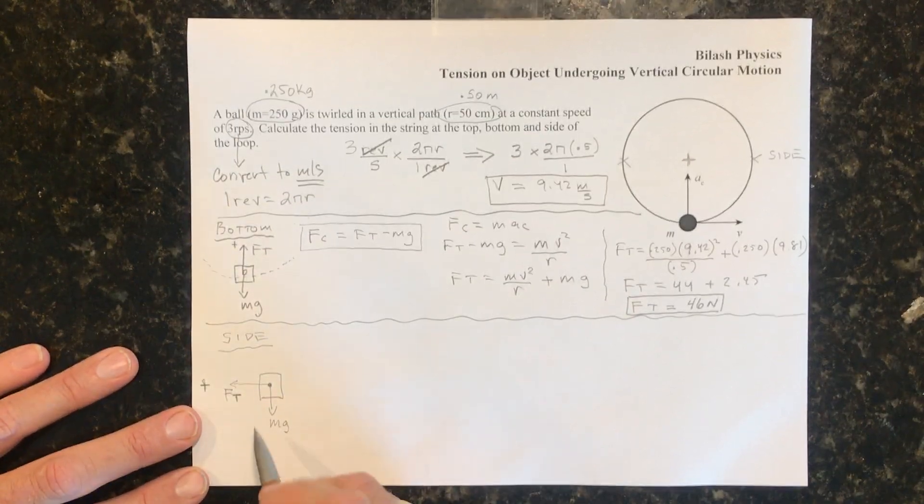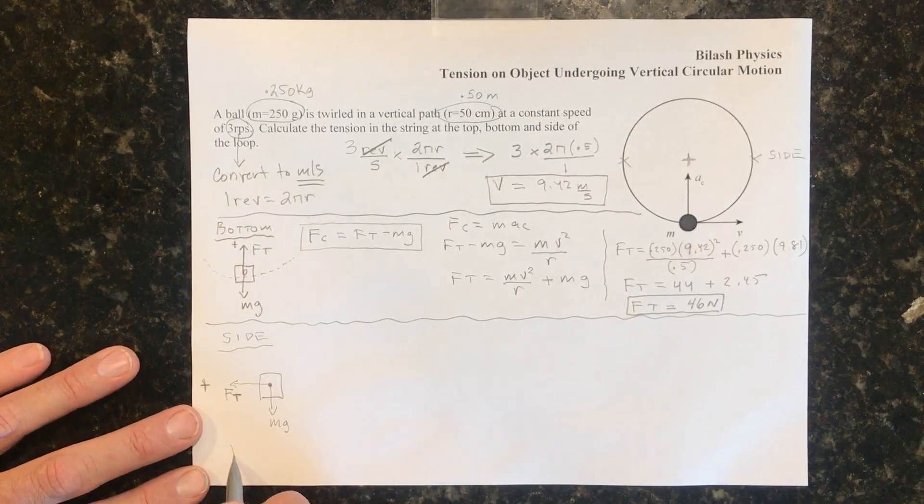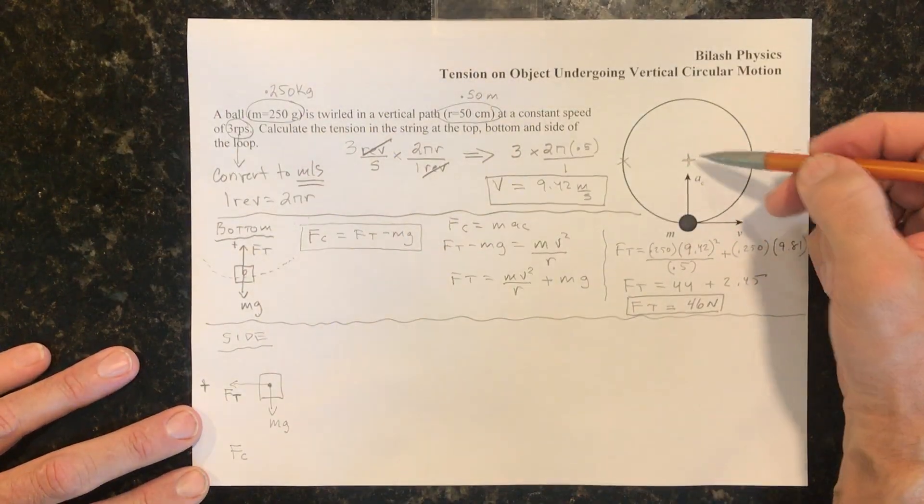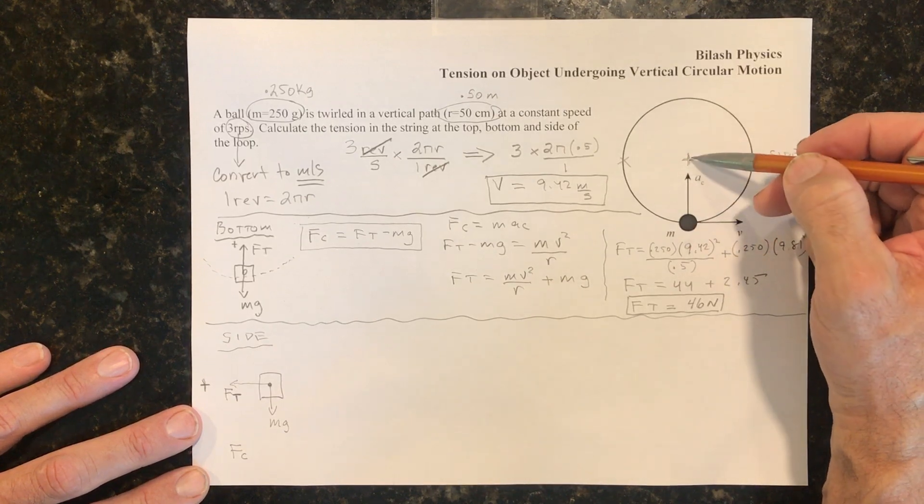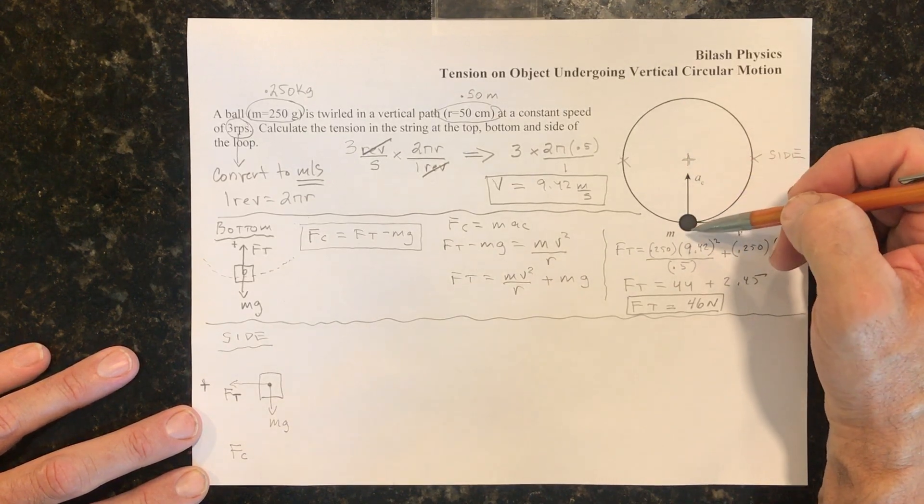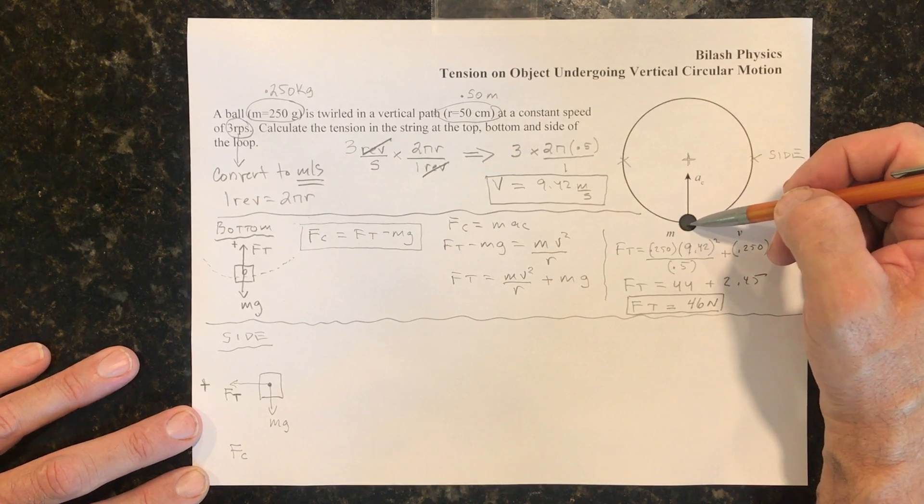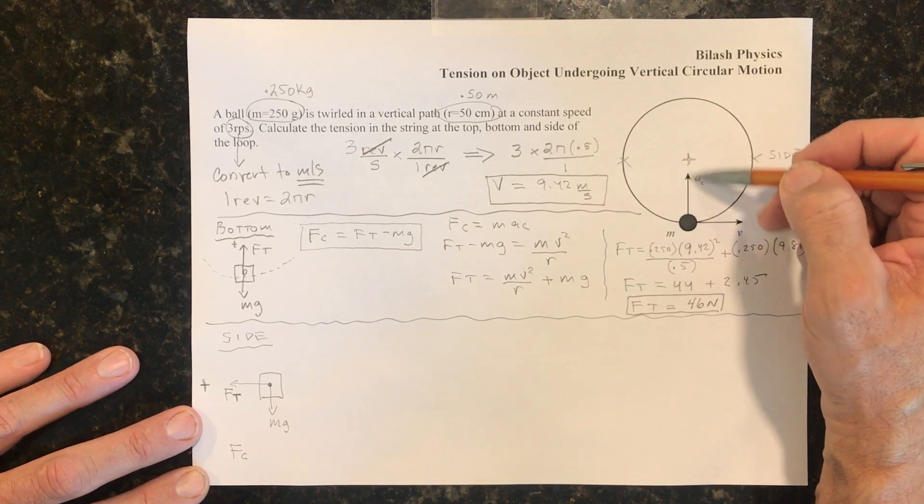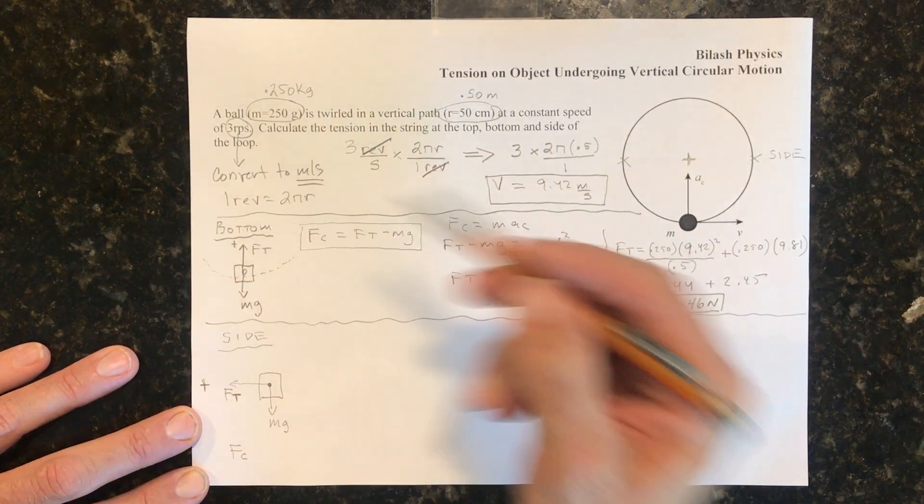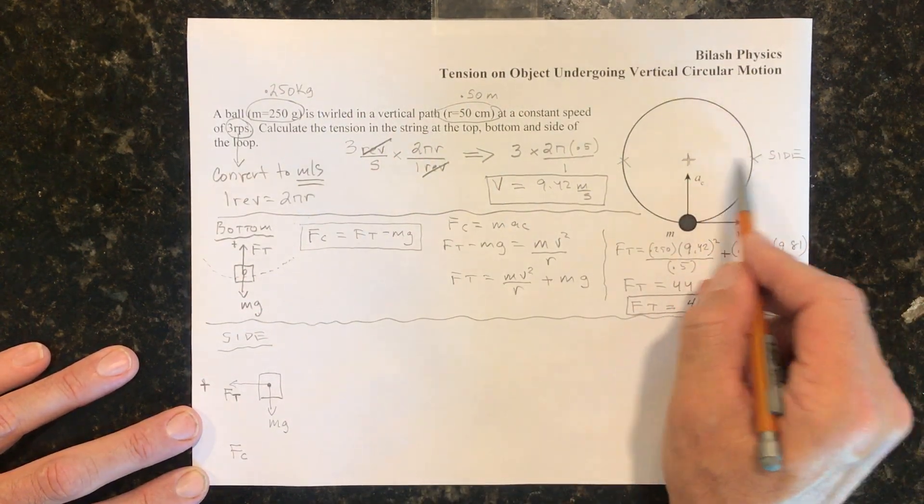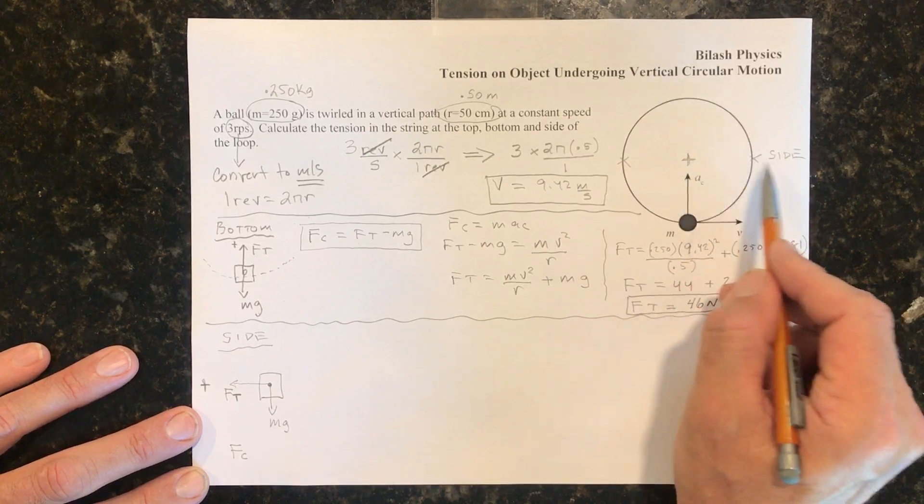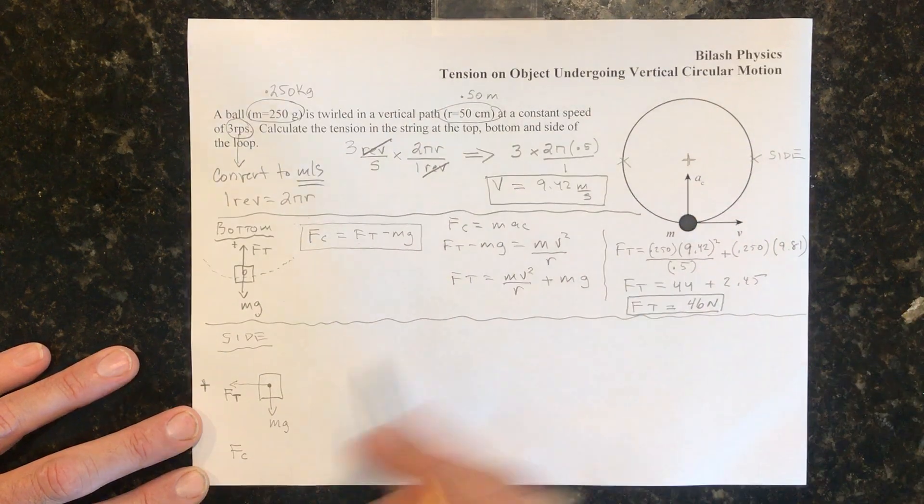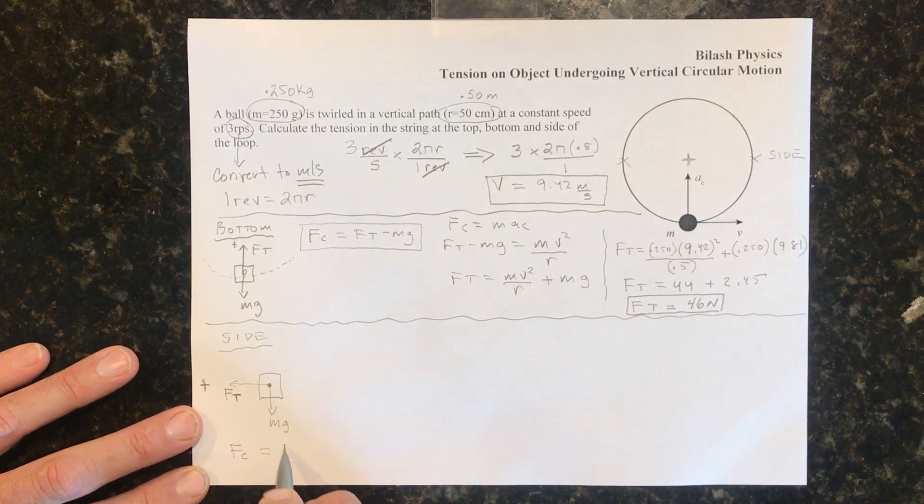So here we see that mg actually isn't even a factor when we're looking at Fc because Fc are all the forces that are in line with the center. So when we were looking at the bottom, the object had mg facing down and the tension facing up. So that's why we had to deal with both of them. But when you're on the side, you only have the tension acting towards the center of the circle. So Fc here is only equal to Ft.